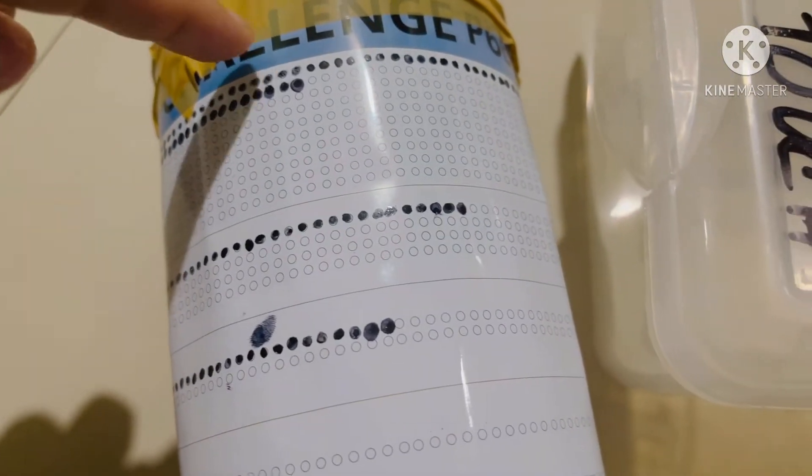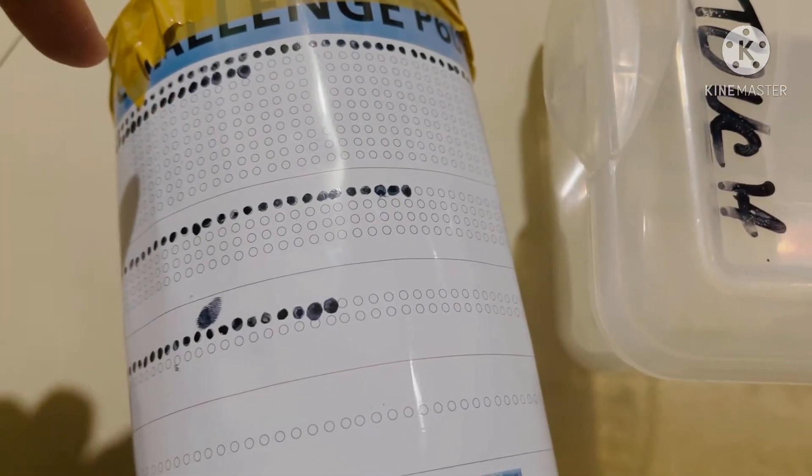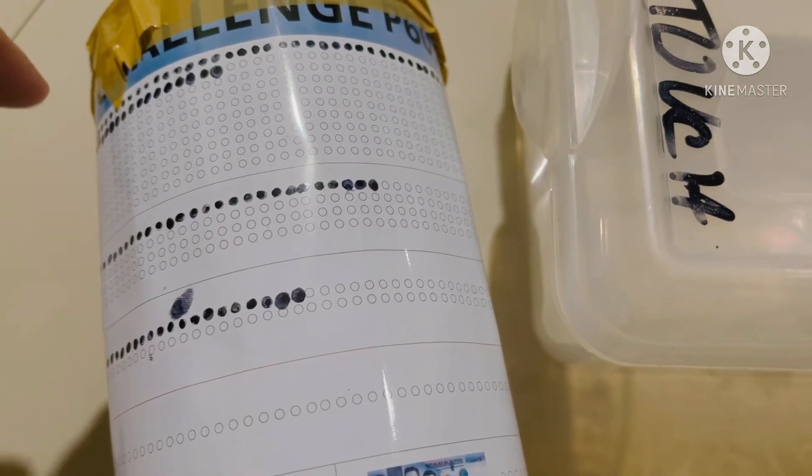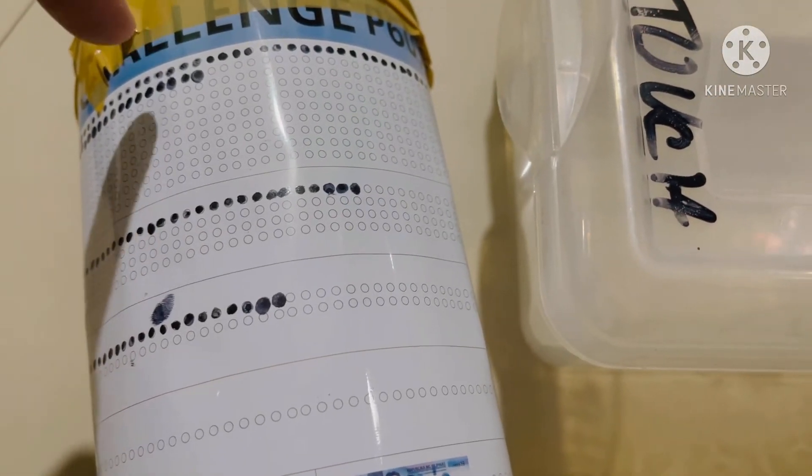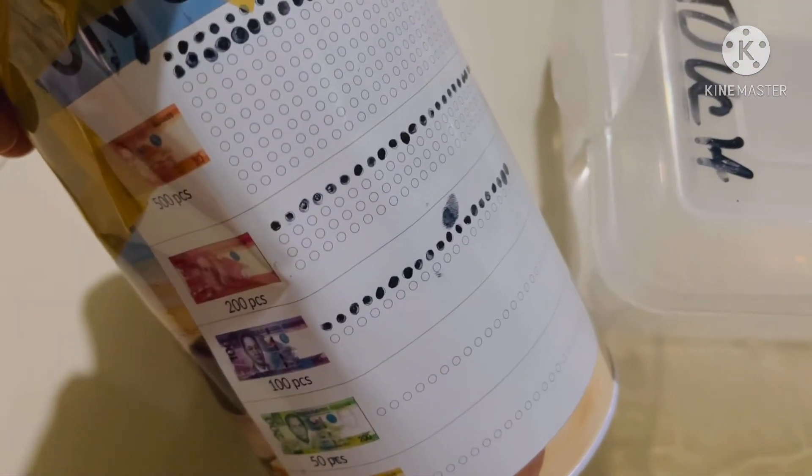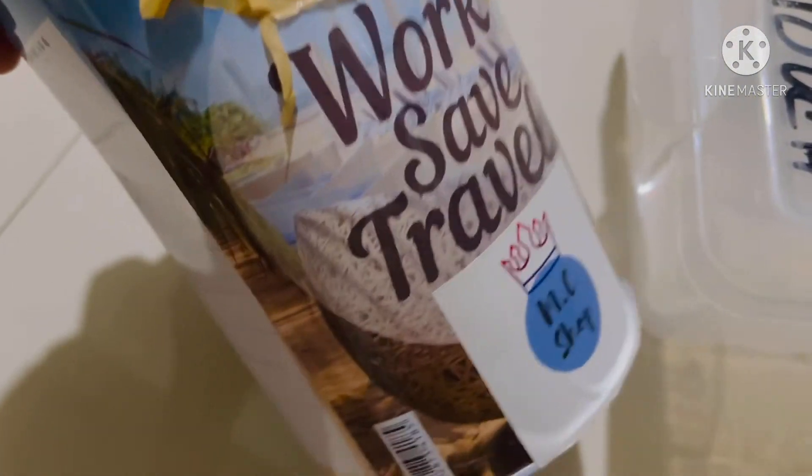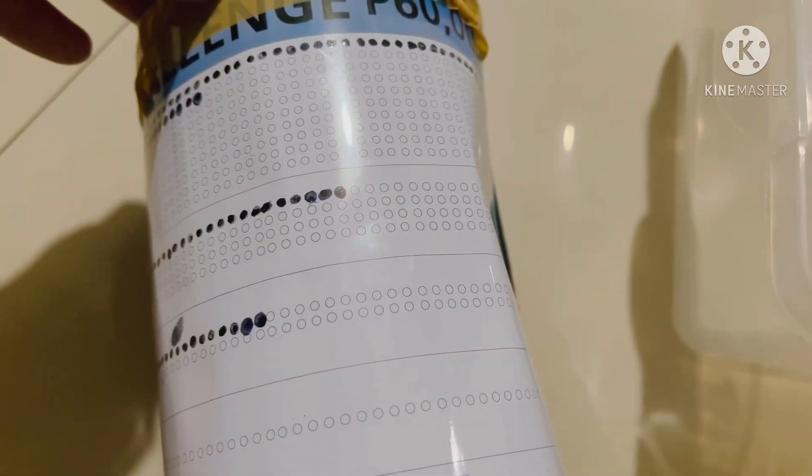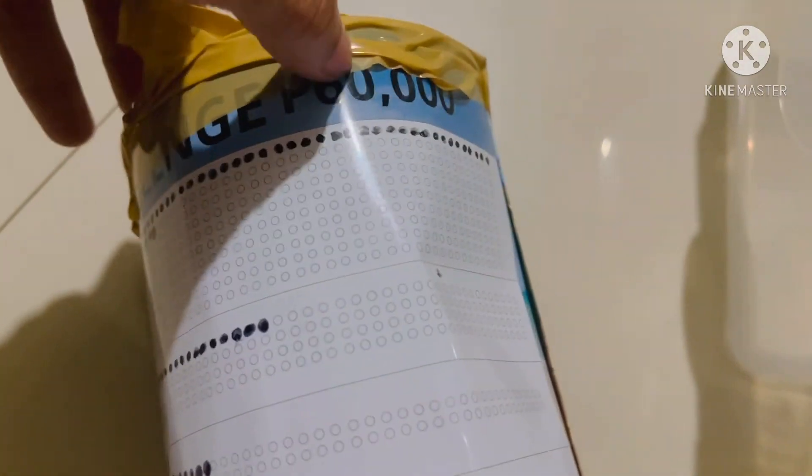Tingnan niyo, ang layo pa. Akala ko, madami na ako naihulog. Pero tingnan niyo, parang konti. Pero marami-rami na rin po yan. Pag kasi ito napuno ko, umabot po ito ng 60,000 pesos. Tapos, pag napuno ko po itong lata na ito, pag napuno ko po itong sulat na yan, umabot po siya ng 60,000 pesos.